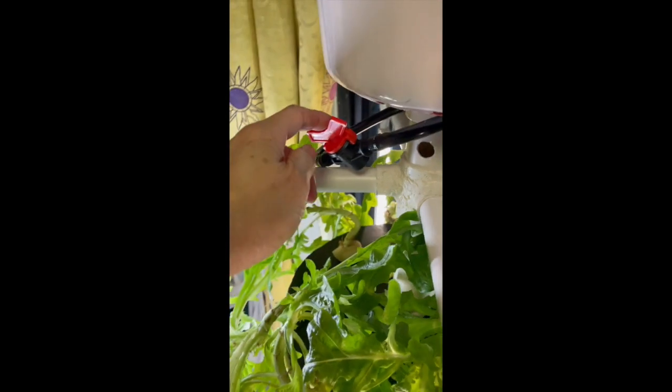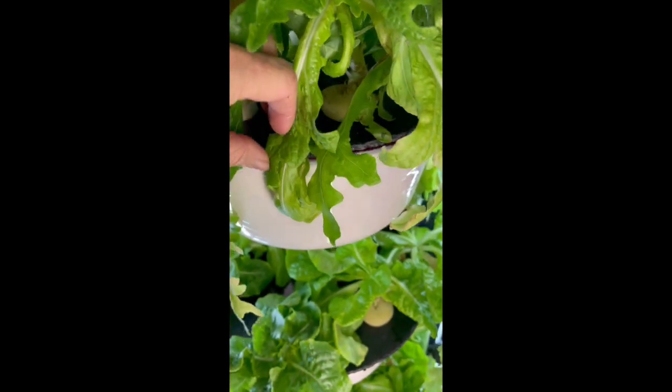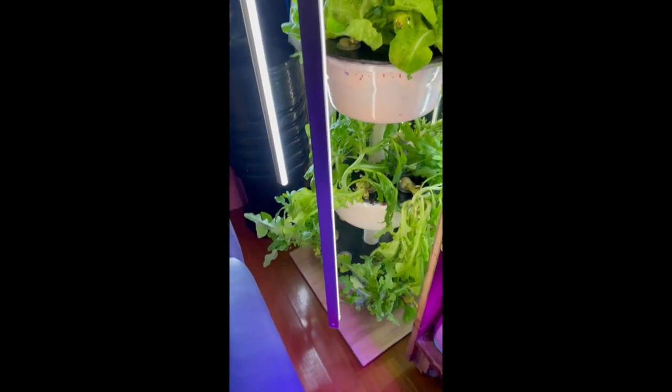So this is the nutrient tank. I haven't covered it yet. So this is where the nutrients start. It is fed through a central duct here to a flow valve here, to each layer and to the bottom.